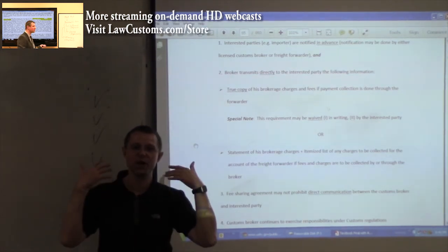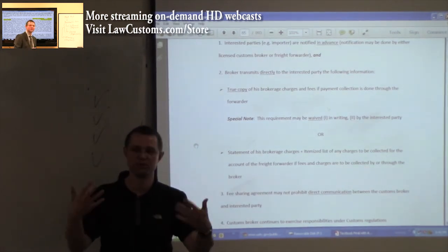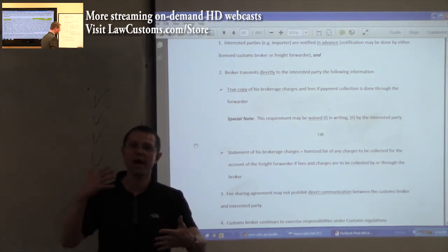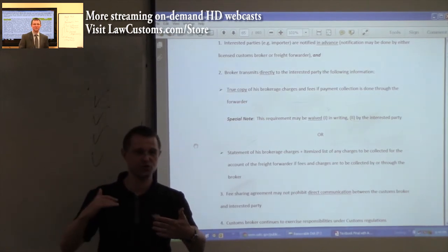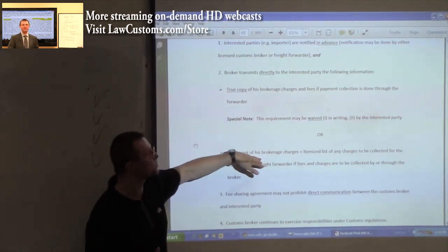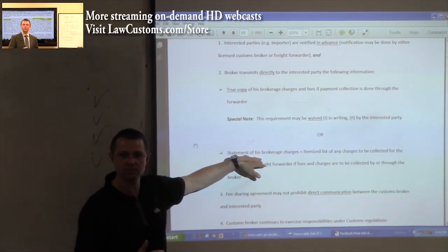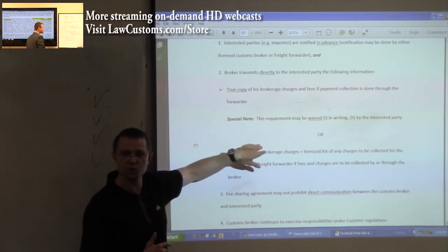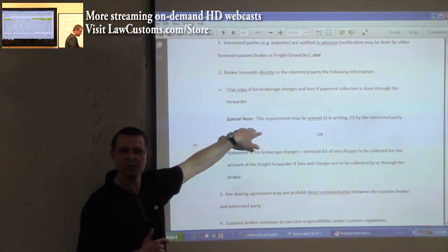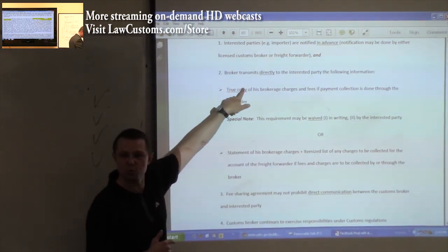And I charge, my fee is $50 per entry, or $100 per entry. So you provide how many entries you've done, you provide your charges, and you tell the importer. Even though you bill a freight forwarder, who bills the importer, you still tell them that this is how much. This is what it means by true copy.